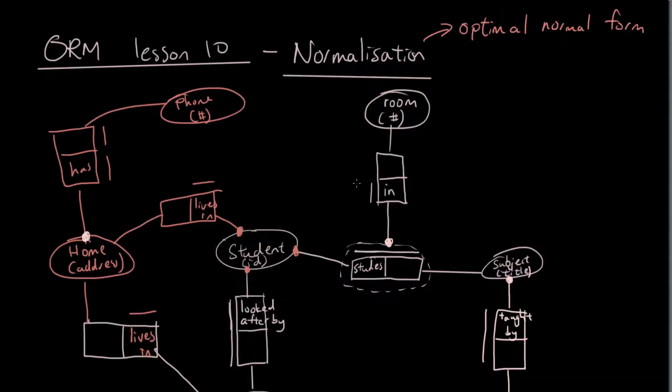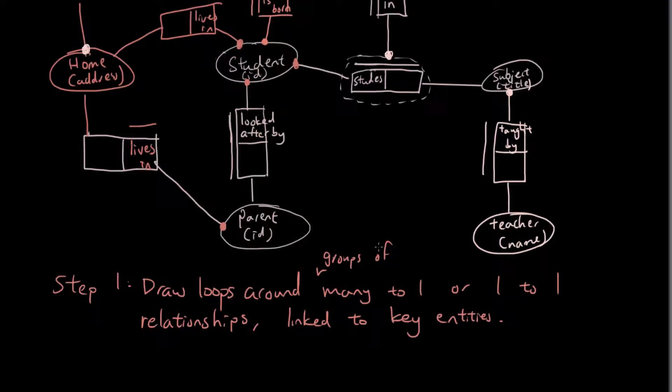In order to come up with the tables, we're going to draw some circles or loops around the relationships that's going to represent each table. So here are the steps. Step one: Draw loops around groups of many-to-one or one-to-one relationships linked to key entities.